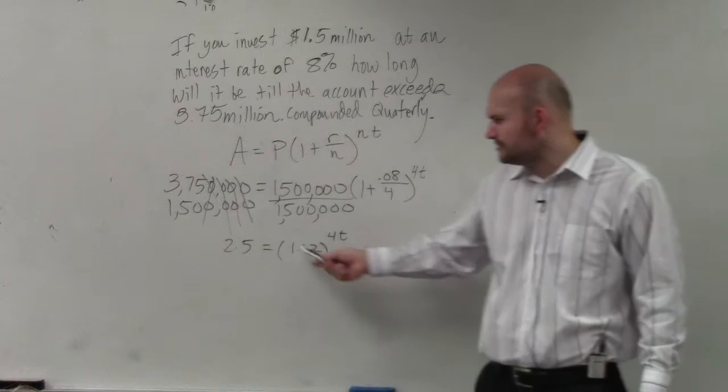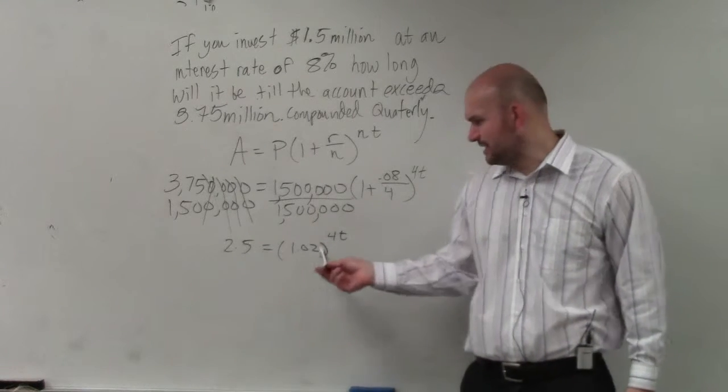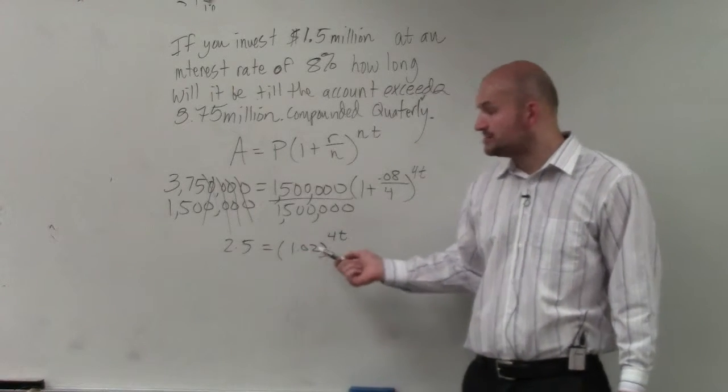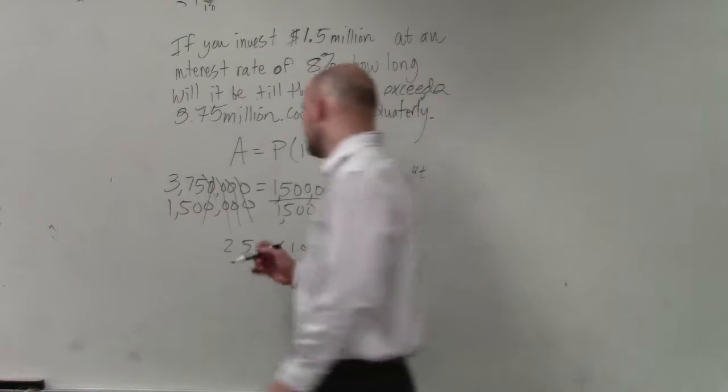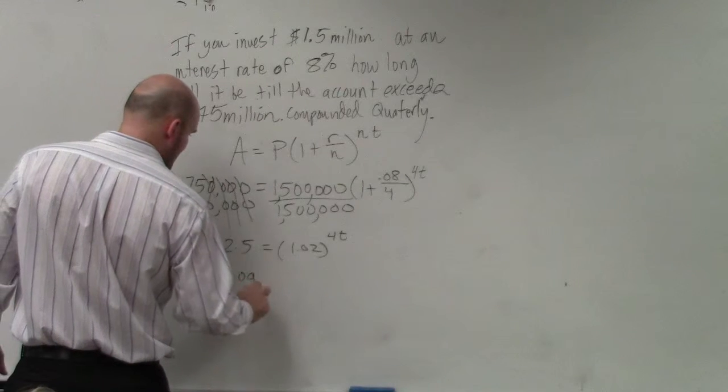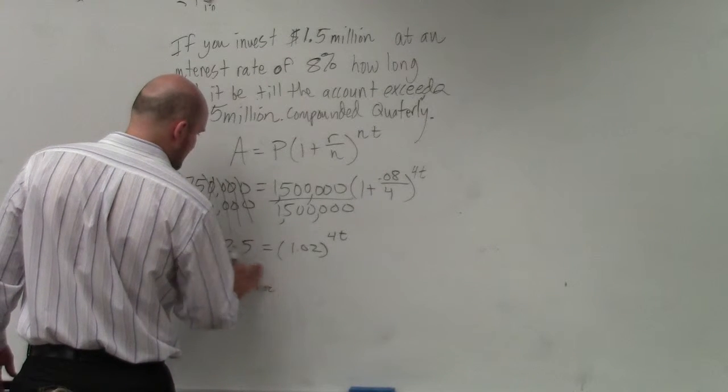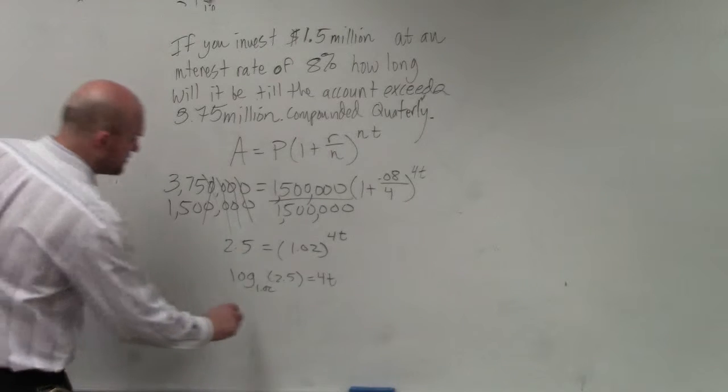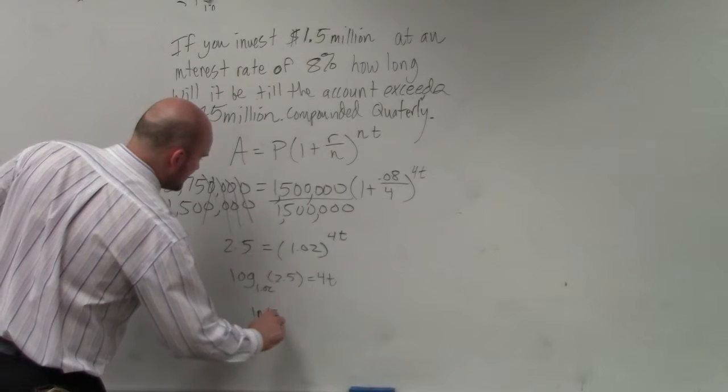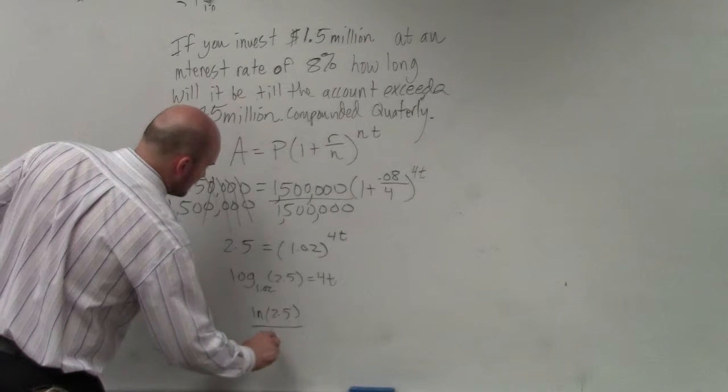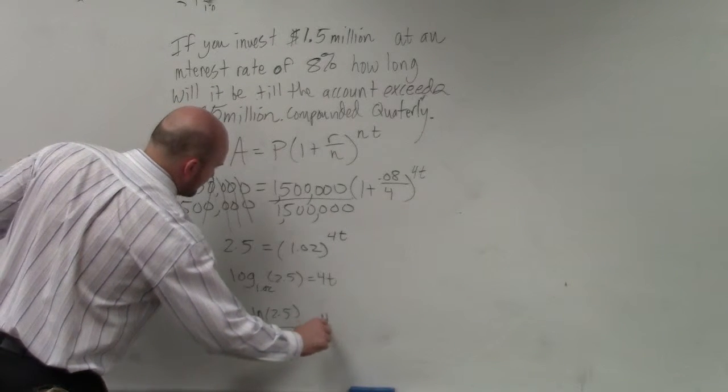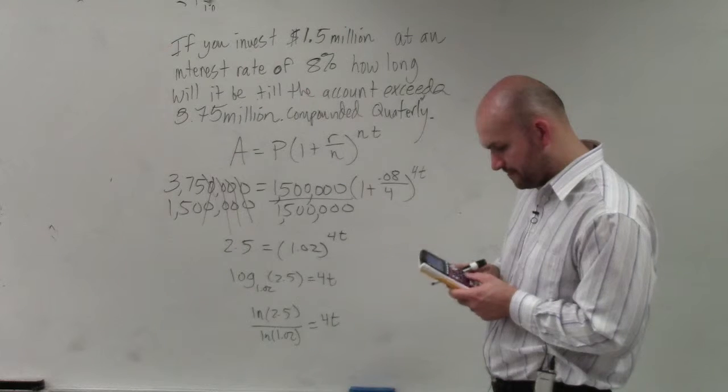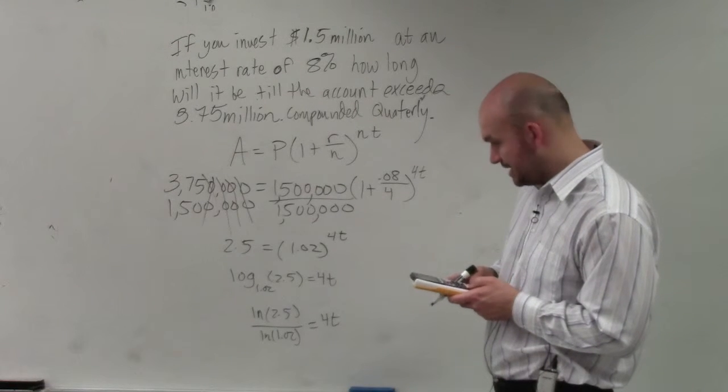Now we just need to solve for t. Should I use the one-to-one property? Does it look like it's going to be easy to raise 1.02 and 2.5 to the same base? Nah, it doesn't seem too much fun, right? So what I can do is just convert this to a logarithm. So I can say log base 1.02 of 2.5 is equal to 4t. Now I can use the change of base formula. You can use log or you can use natural log.